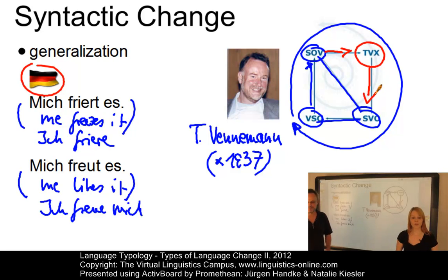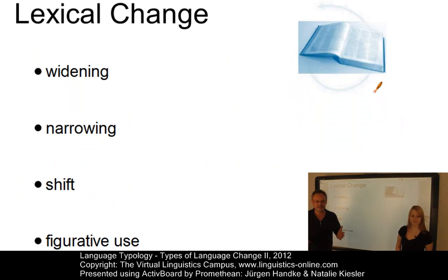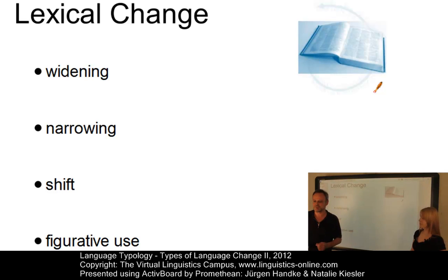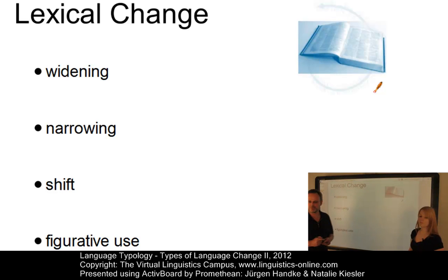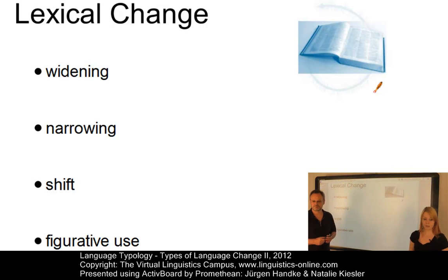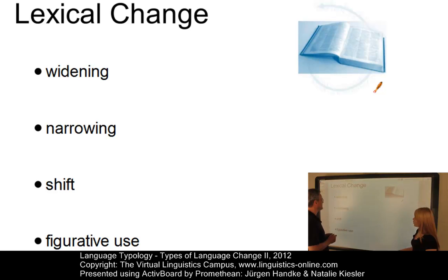So much for syntax. Let us now look at some lexical changes. Lexical change — that is, change that concerns the vocabulary of a language — is perhaps the most obvious change you register when you look at linguistic change. Many people are fascinated by this type of change because it is profoundly connected with life, culture, sociology, and literature. There are two basic principles involved: first, the arrival of new words, and second, the loss of already existing lexemes. These types of changes can be subdivided further into widening, narrowing, shift, and figurative use.